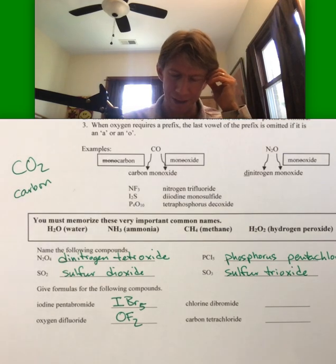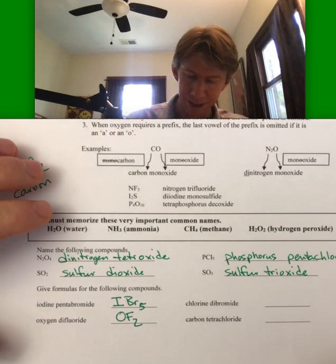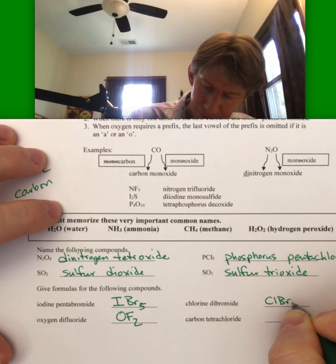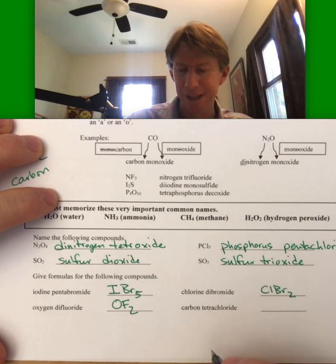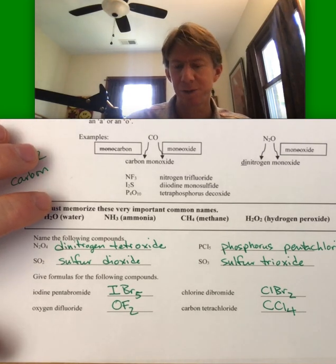All of these actually only have one for the first one, which is common but not quite that common. Chlorine dibromide. And carbon tetrachloride. Four chlorines attached to a carbon.